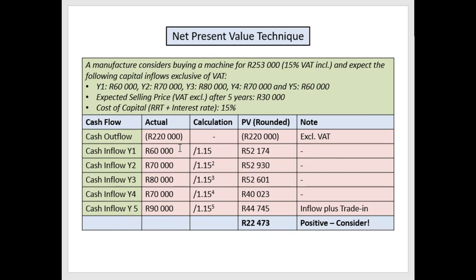In the first row we put the number in brackets to indicate it's negative — initially it's an outflow of money. You could also use a minus sign; I don't care whether you use brackets or a minus. The cash outflow at present means the present value is simply the amount itself — 220,000 exclusive of VAT, which is 253,000 divided by 1.15.